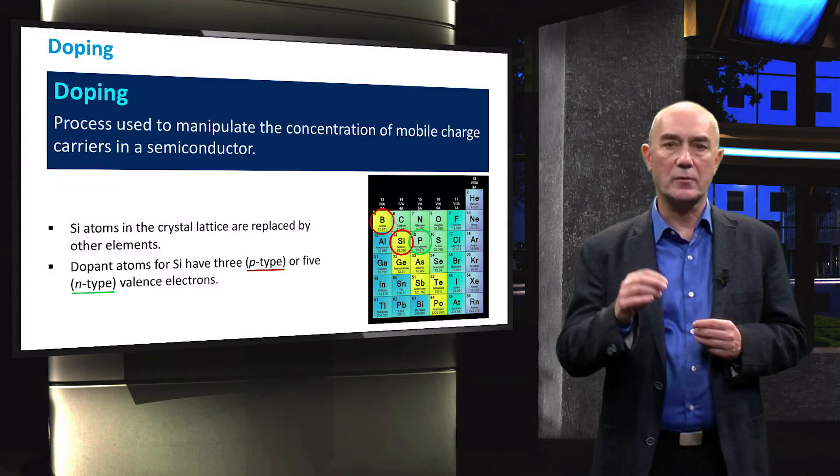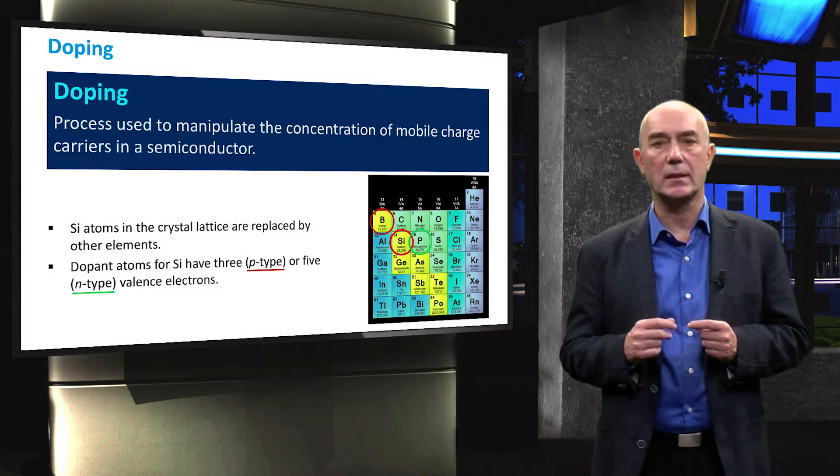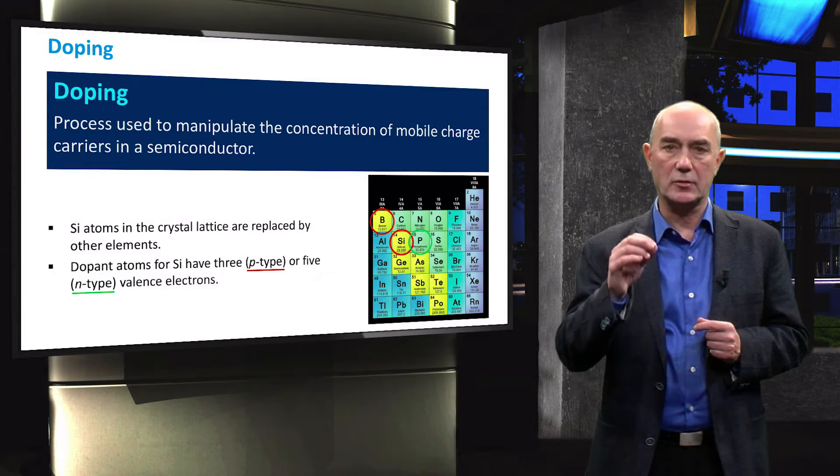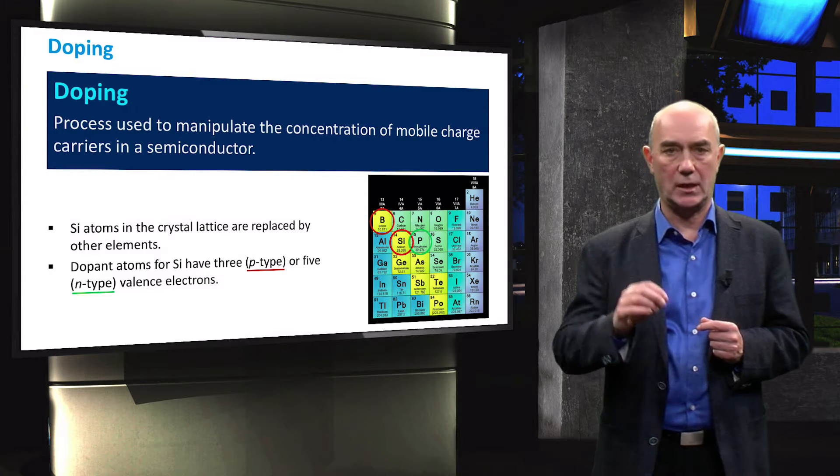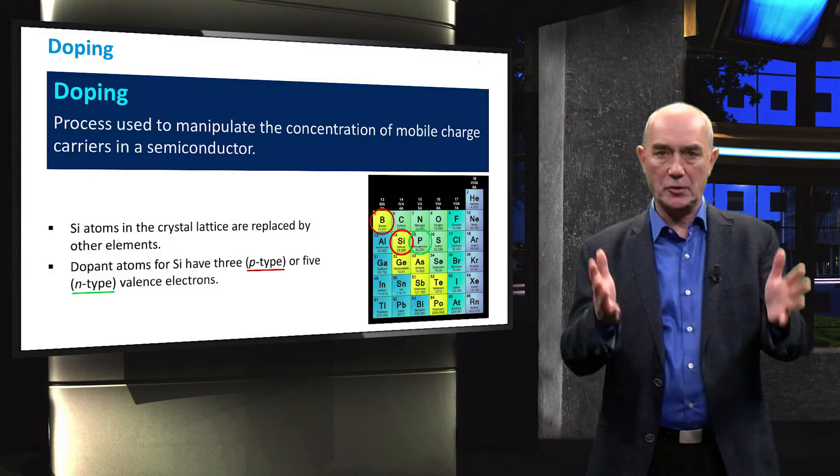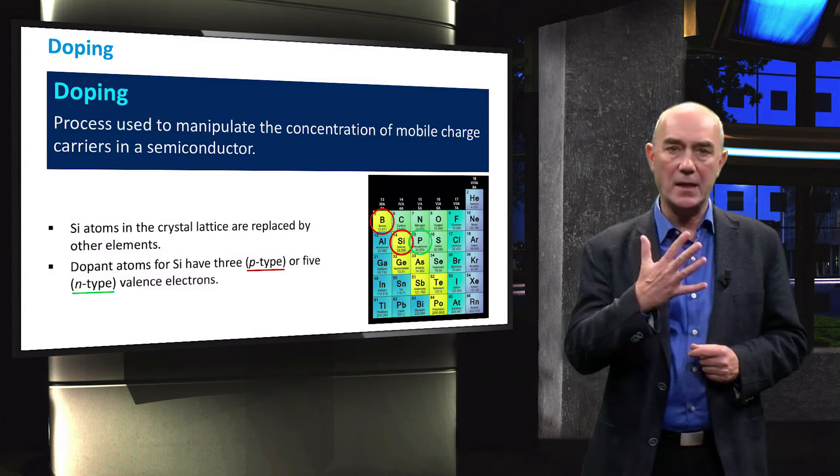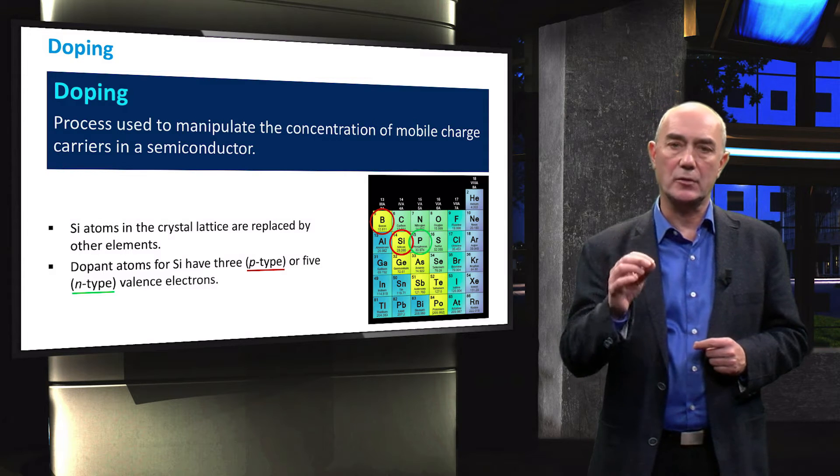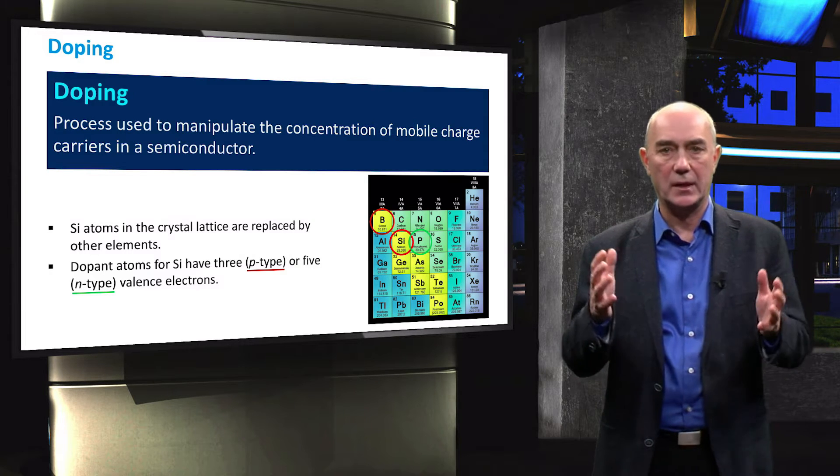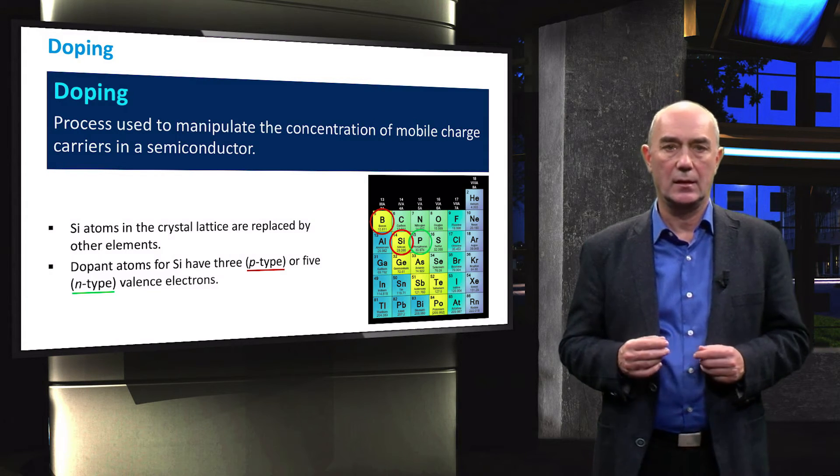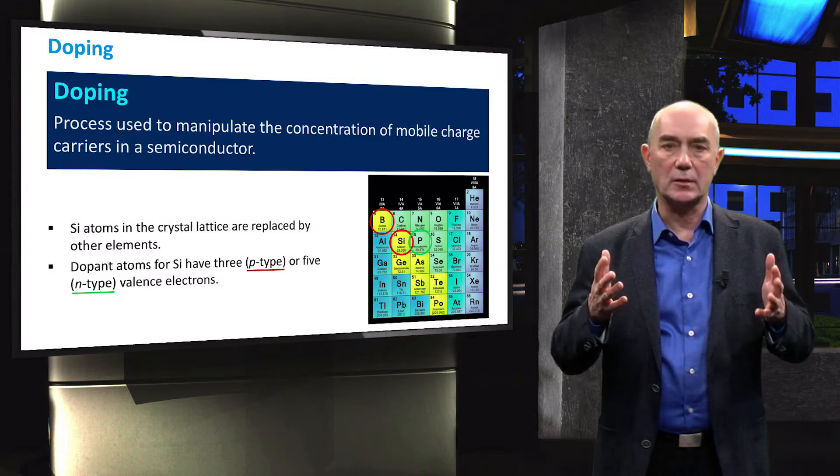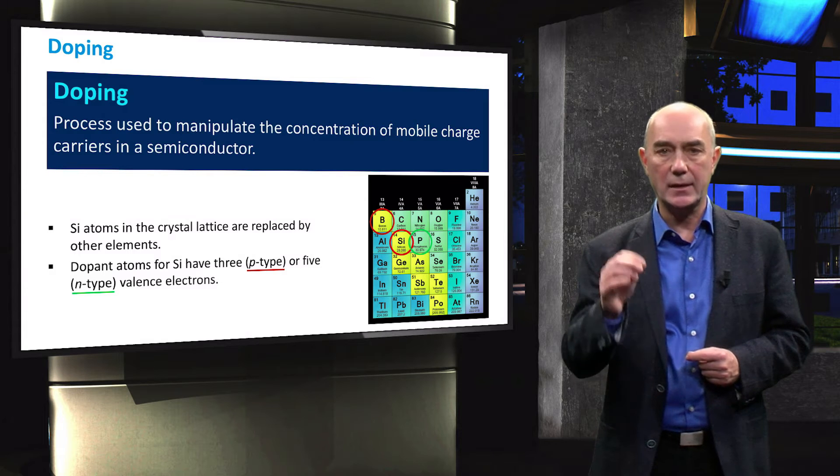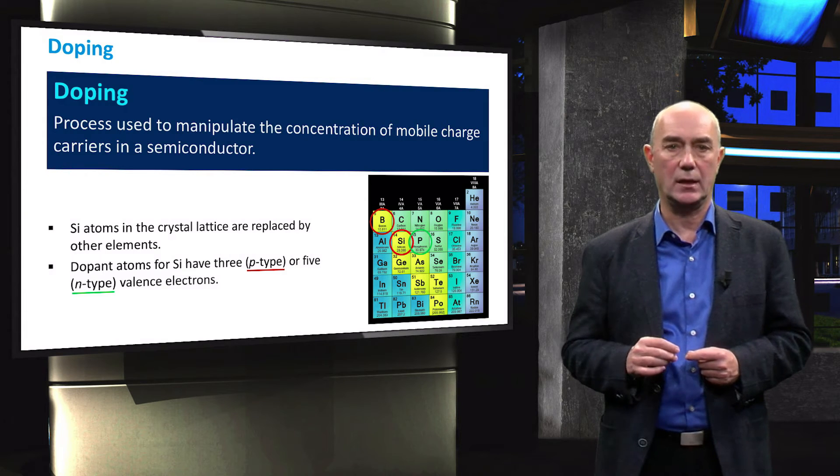The presence of boron or other group III atoms is known as P-type doping because it increases concentration of positive charges. N-type doping increases the concentration of negative charges. We will go further into the consequences of doping in the coming week. P means extra positive charge carriers.